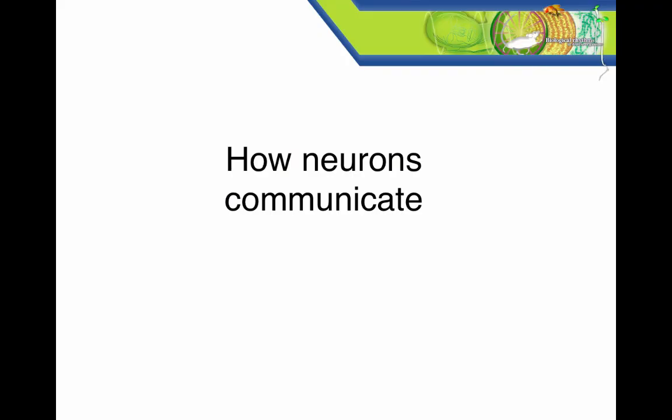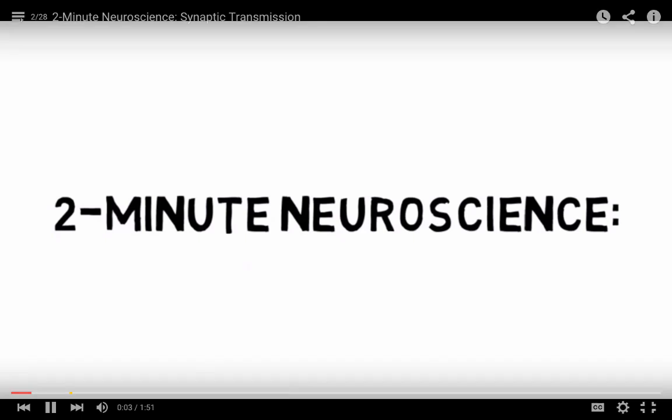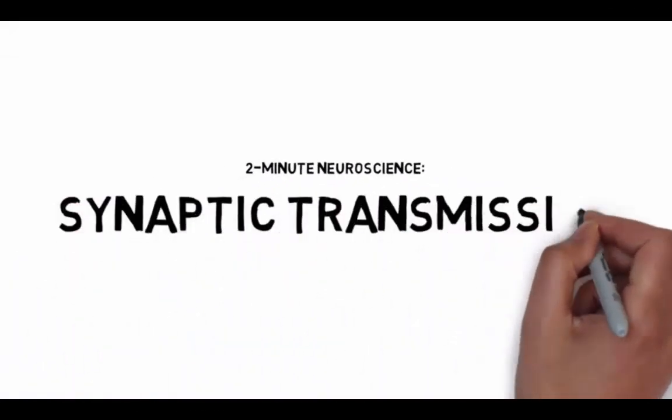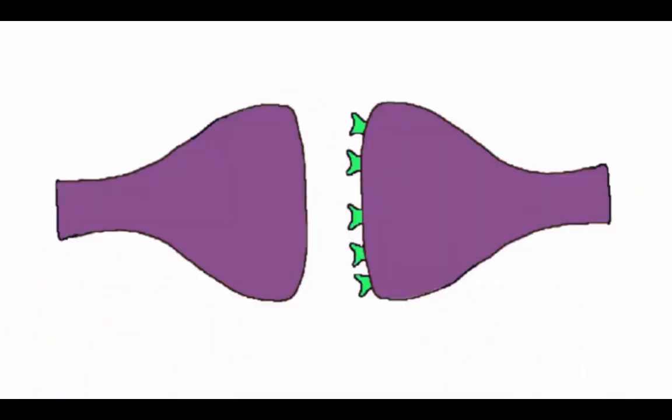Next, we'll discuss how neurons communicate with one another via chemical signals across the synapse between two neurons. Welcome to Two Minute Neuroscience, where I simplistically explain neuroscience topics in two minutes or less. In this installment, I will discuss synaptic transmission. Most communication between neurons occurs at a specialized structure called a synapse. A synapse is an area where two neurons come close enough to one another that they are able to pass chemical signals from one cell to another.